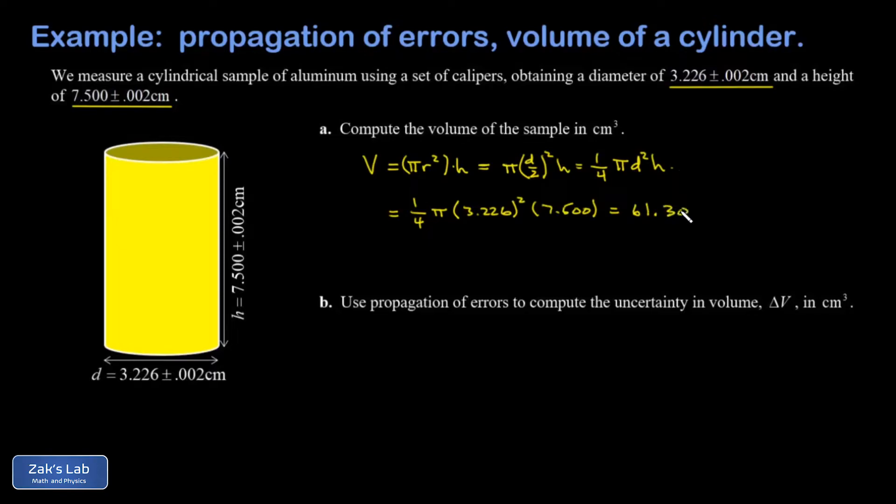In part B we're asked to use the propagation of errors formula to get the uncertainty in the volume. What isn't stated in the instructions here is that when we get that uncertainty, our convention is to round the uncertainty to one significant digit.